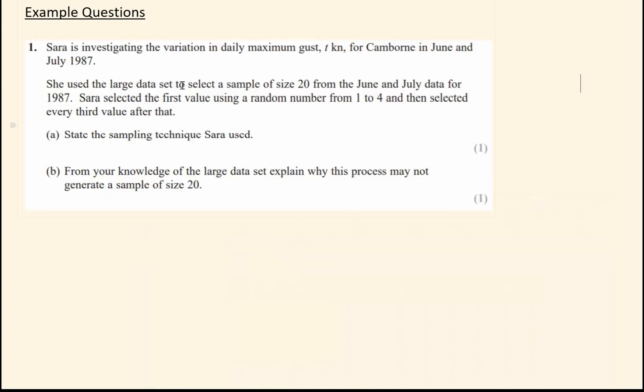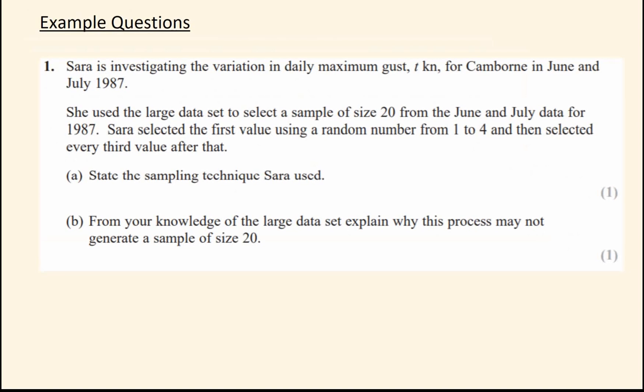I'm just going to quickly give you two example questions. So you're back in the swing of things. So Sarah's investigation on variation in daily maximum gust in knots for Camborne in June and July from 1987. She uses a large data set to select a sample of size 20 from June and July from 1987. She selects the first value is random from one to four. And then selects every third value after that. So you saw this. This sampling technique is systematic. So for systematics where you're going up by the same jump each time.